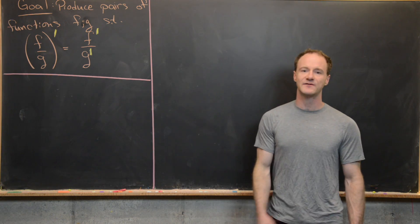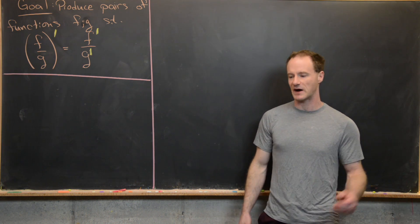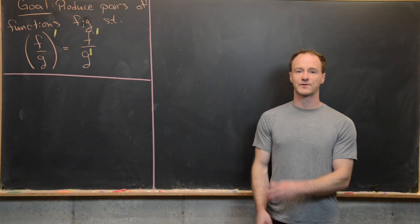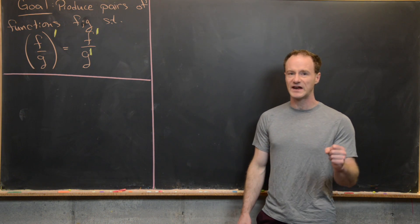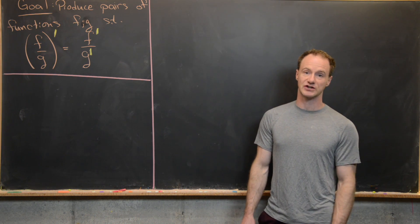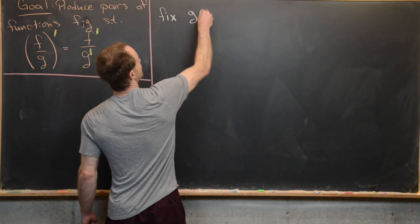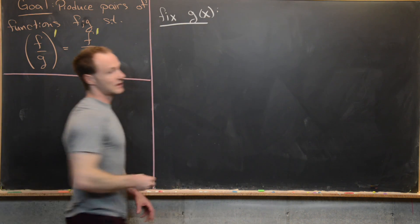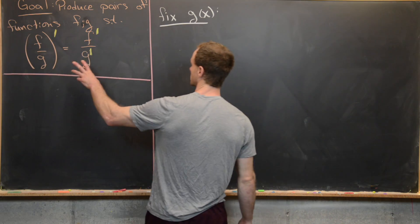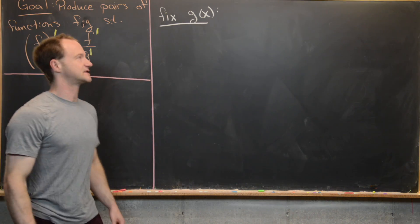In other words, the derivative of f divided by g is the same thing as the derivative of f divided by the derivative of g. We don't want to leave both functions free, so what we'll do is fix one of the functions and use that to define a differential equation for the other. So let's fix the function g of x — it's still an arbitrary function, but fixing it creates a differential equation for f that would make this nice quotient rule satisfied.